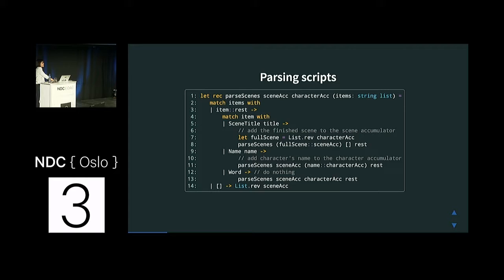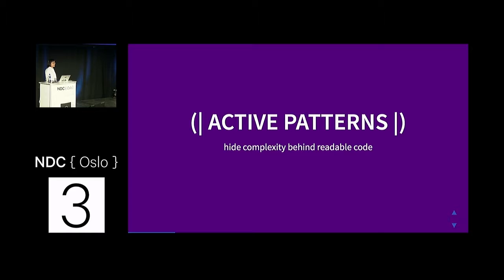This is readable. When I went back to my original implementation with all the regexes everywhere, I had no idea what was happening. For me, this is the way to write parsers in F#, at least for very simple cases. If you want to play with F#, definitely look at active patterns because they allow you to hide implementation details so you don't have to care about them in higher-level functions.